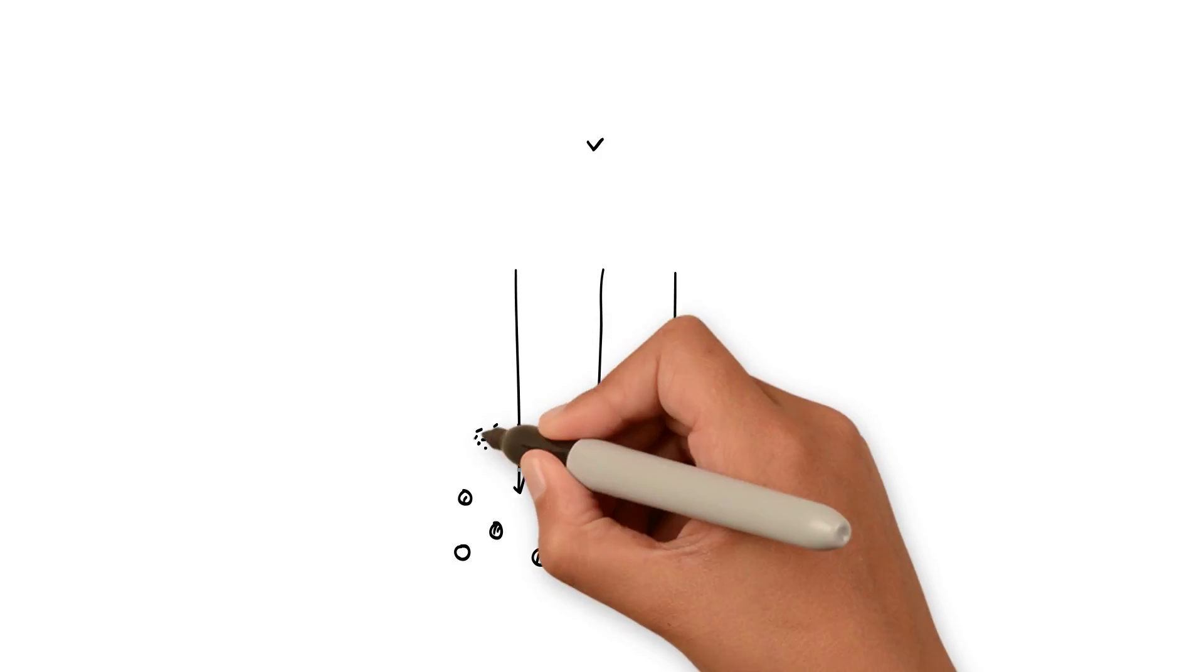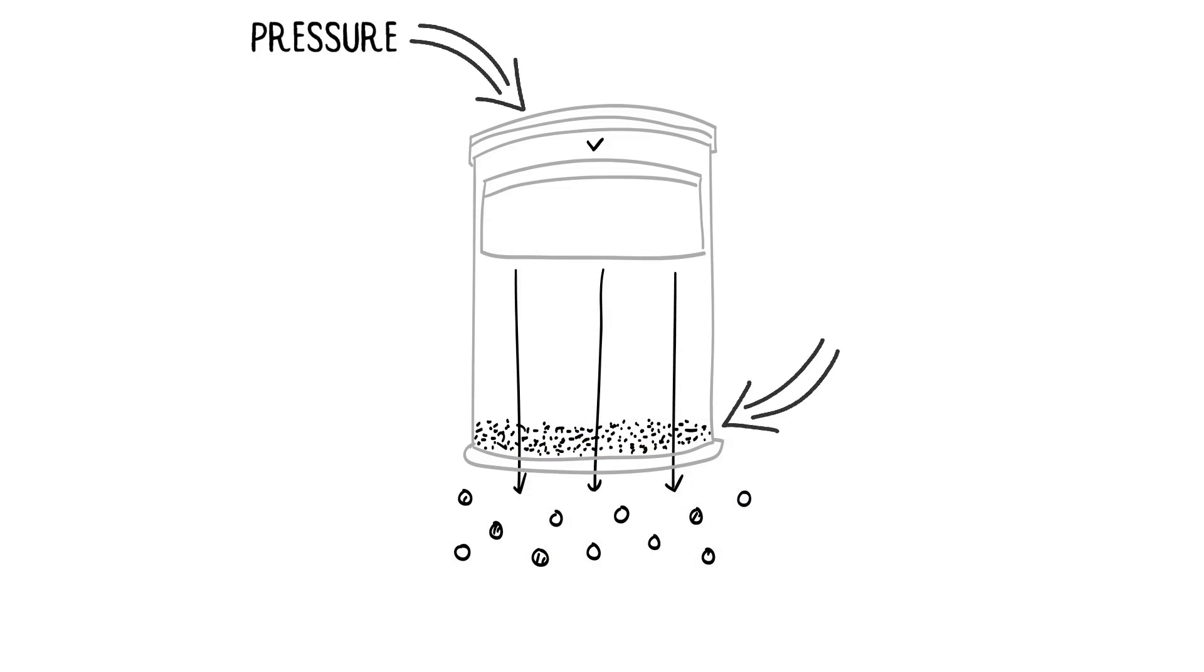On a standard piston press, the flow rate is relative to the pressure exerted at the top. So to increase the flow rate, you'll need to press hard and fast.